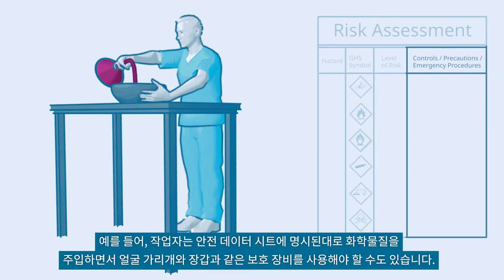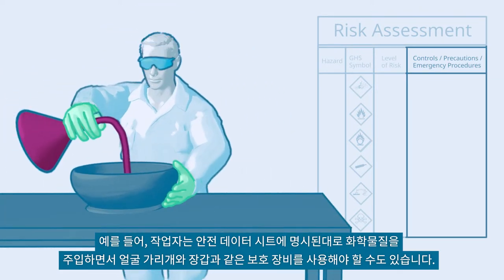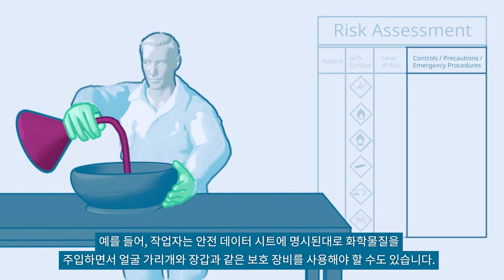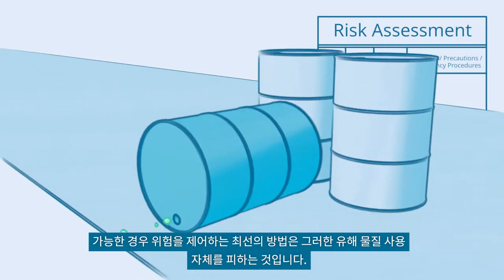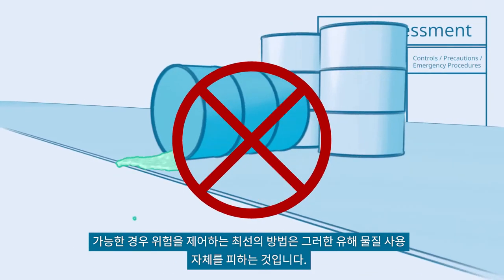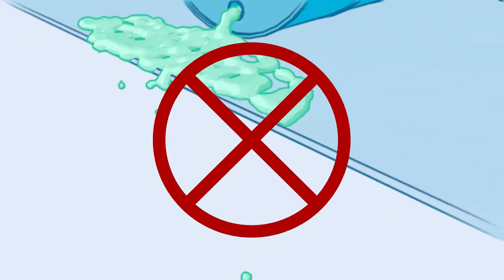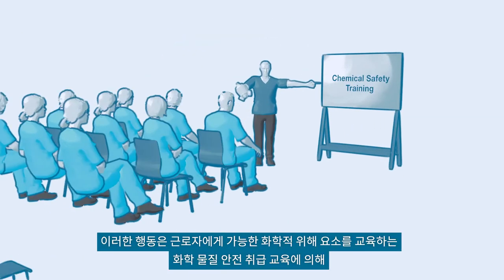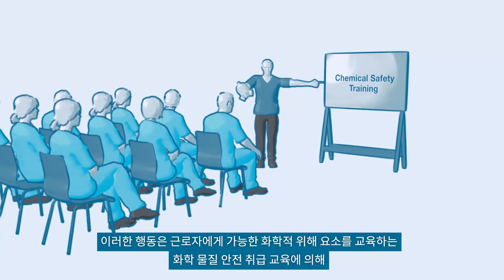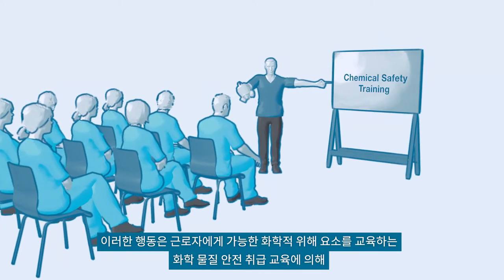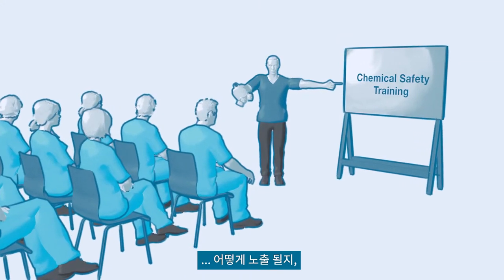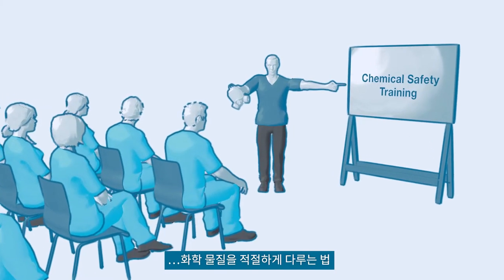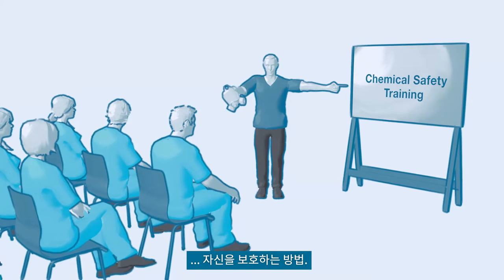For example, the worker may have to use protective equipment such as a face shield and gloves while pouring, as prescribed in the Safety Data Sheet. If feasible, the best option to control the risk is to avoid using such hazardous substances.